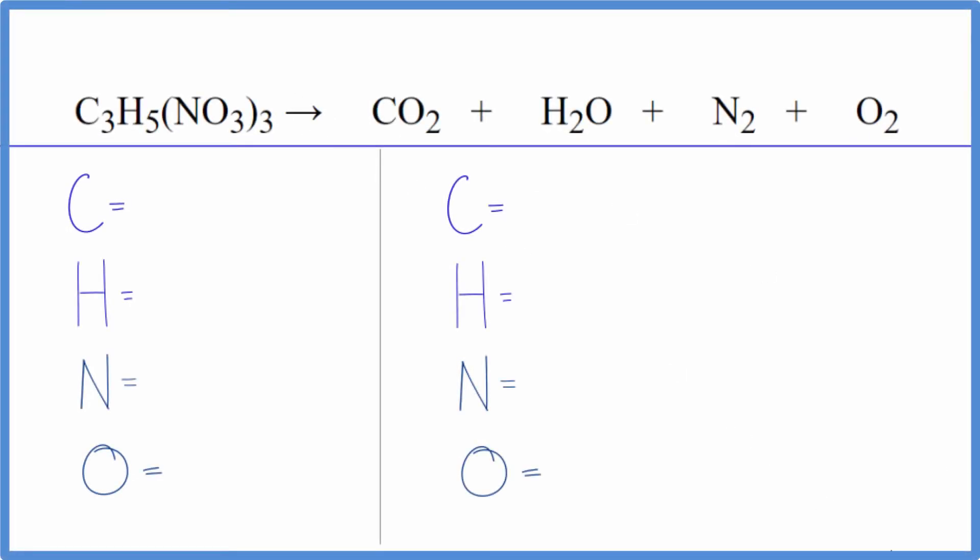In this video we're going to balance an equation that's a little bit challenging. This is trinitroglycerin and this will explode and it forms all these substances. So this one substance explodes and then you get gases, and these gases that's what causes the explosion. They expand, they push things out like rock and things around them, boom.